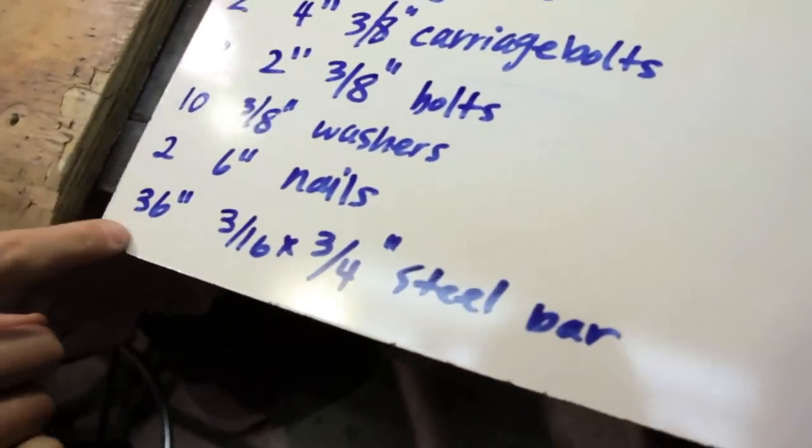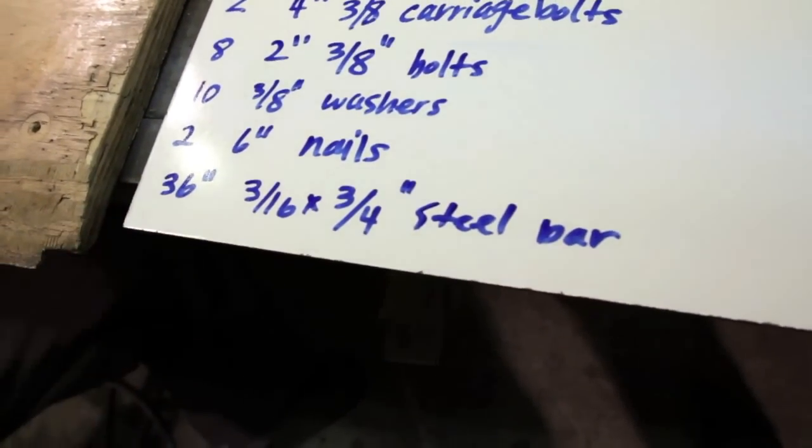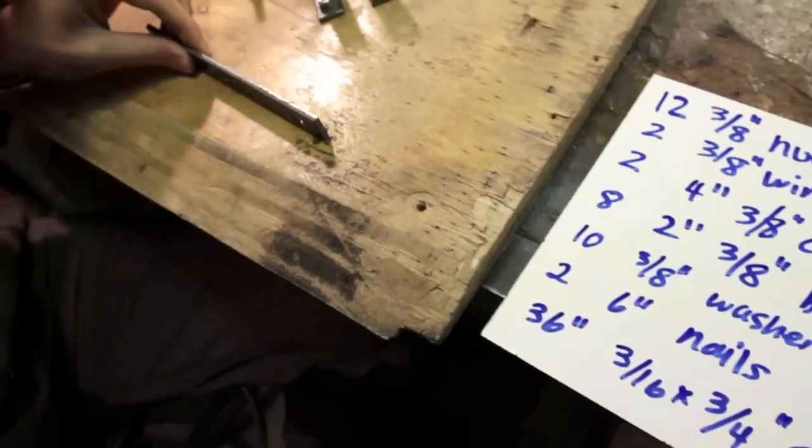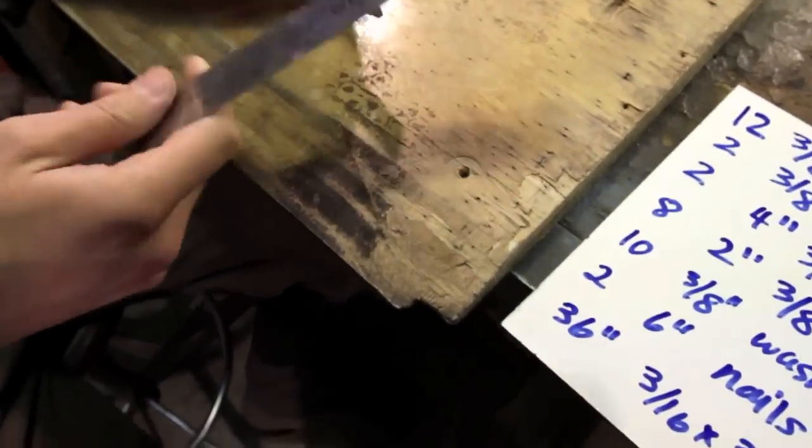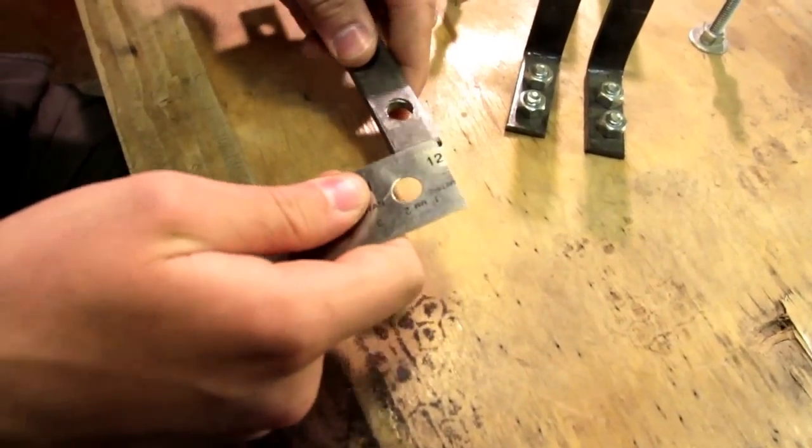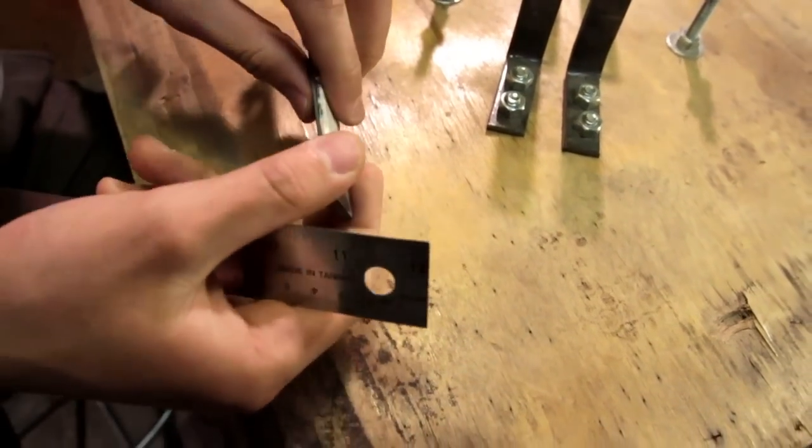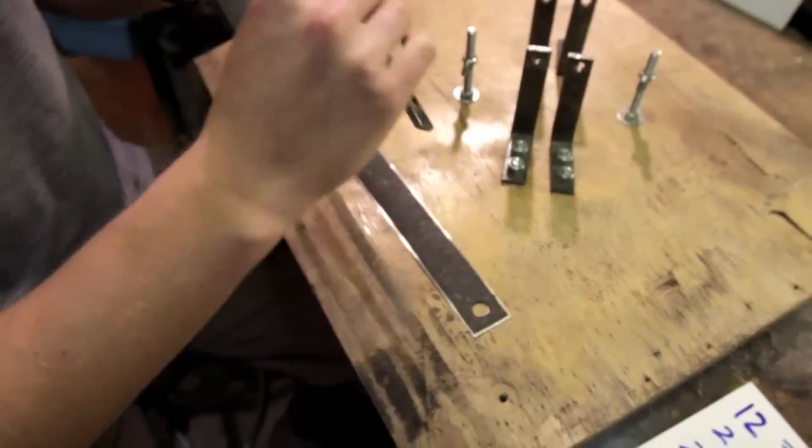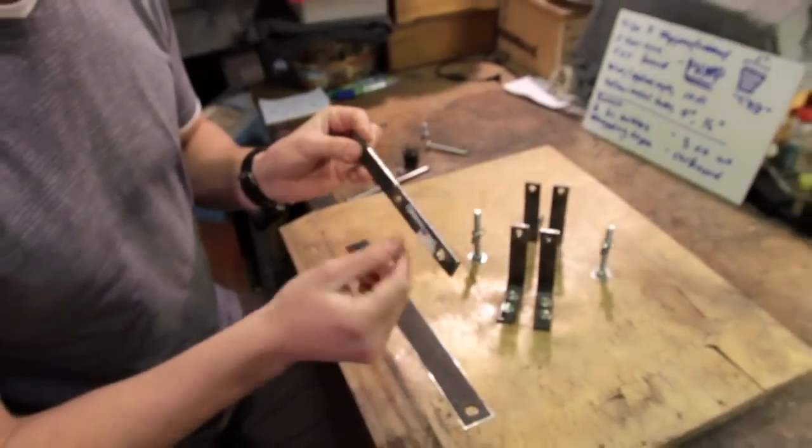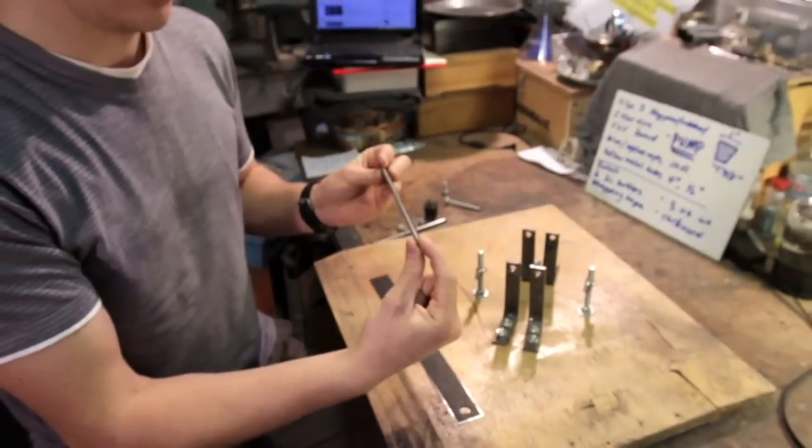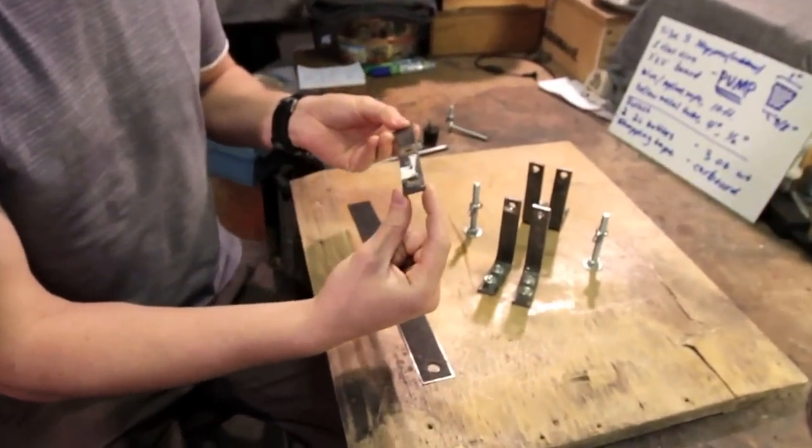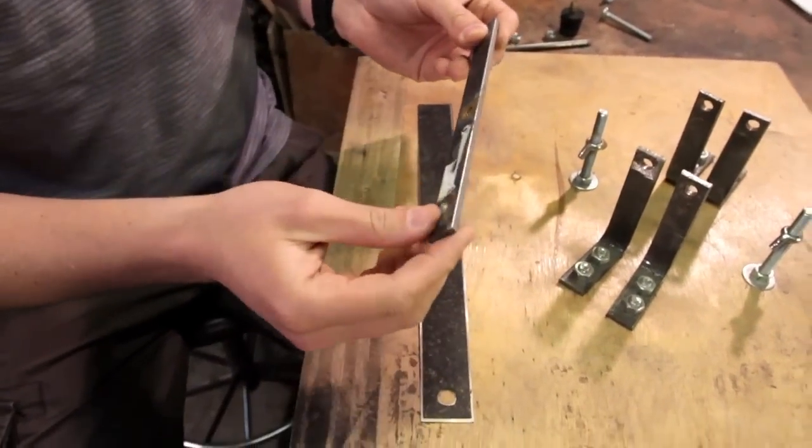And then you're going to need 36 inches of a 3/16 inch, that means this way. So it's 3/16 inch this way by 3/4 inch this way steel bar. So it needs to be 36 inches long with 3/16 inch thickness and 3/4 inch width. And you're going to have to cut that up.